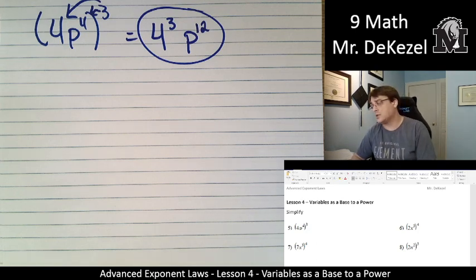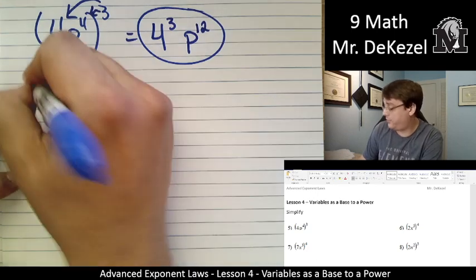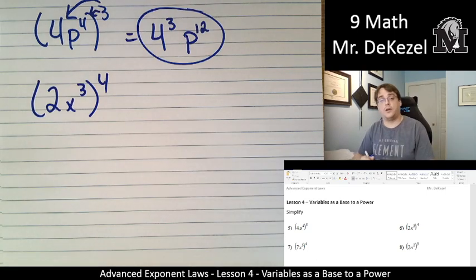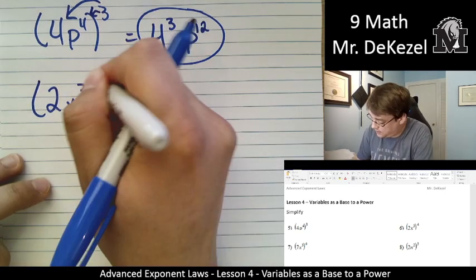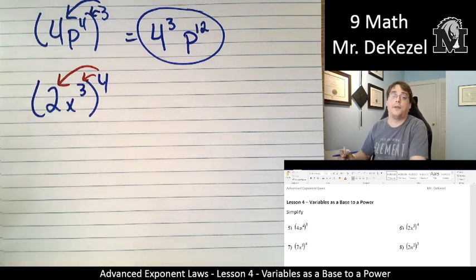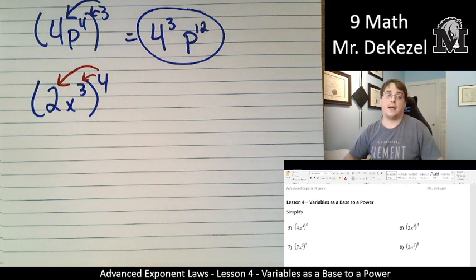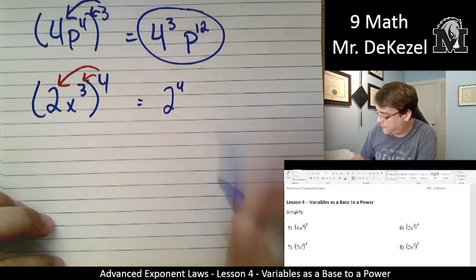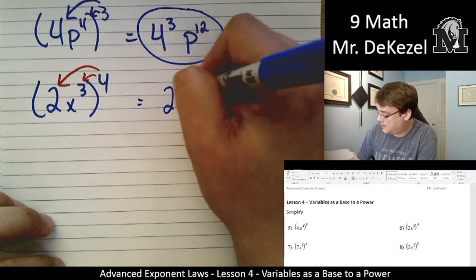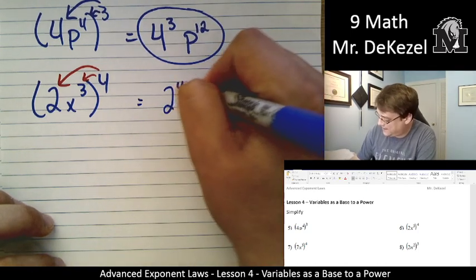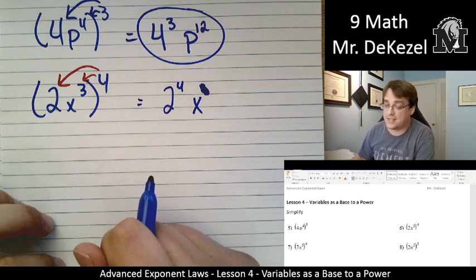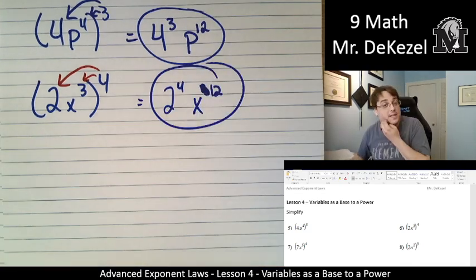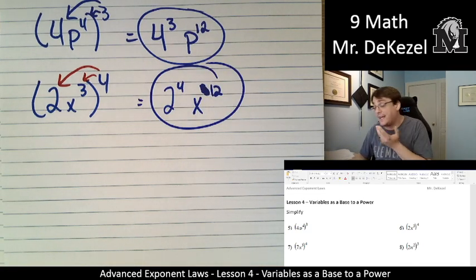Let's continue on here. We have next two x to the power of three all to the power of four. I'll use the red. We're going to apply that four to both the two and the x cubed. So we are going to end up with two to the power of four, x. Oh I wrote that's wrong, it should be x to the power of three times four which is 12 again. We're allowed to make mistakes and I write in sharpie so I can't erase them.